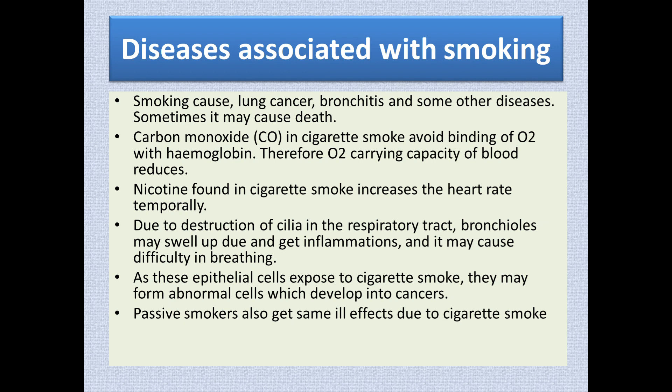When a person smokes, due to inhaling this warm or hot smoke, the cilia of the respiratory tract are destroyed. The cilia are important for preventing dust particles and other foreign particles from getting into the lungs. When the cilia and even the inner lining of the bronchus and bronchioles are destroyed, the bronchioles and bronchus get inflamed, leading to bronchitis.